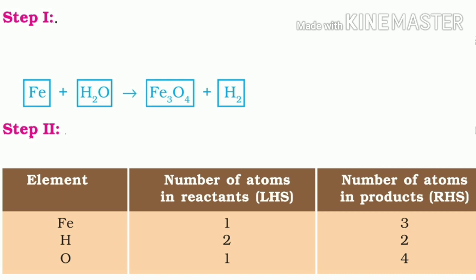Now we will learn how to balance a chemical equation. This whole method can be divided into 7 small steps. Step 1: To balance a chemical equation, first draw boxes around each formula. We should not change anything inside the boxes while balancing the equation. After drawing the boxes, the equation is represented as: Fe + H2O → Fe3O4 + H2. Step 2: List the number of atoms of different elements present in the unbalanced equation.